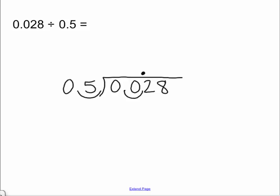Then we start dividing with the standard long division method. So we ask, does 5 go into 0? It doesn't go into 0. It does not go into 2. So we have to put a 0 here. 0 times 5 is 0. Subtract. You get 2.